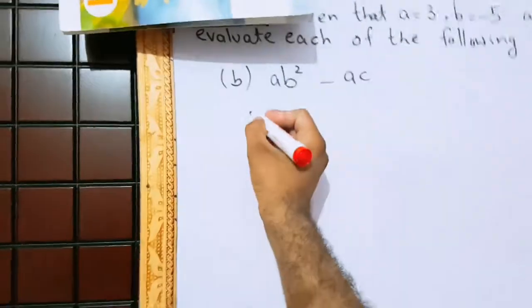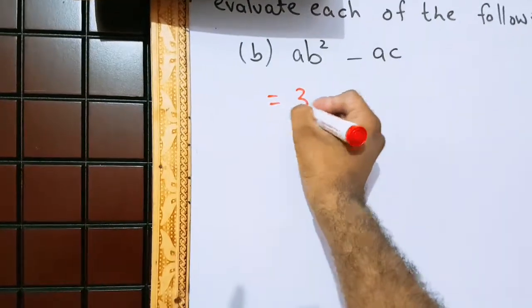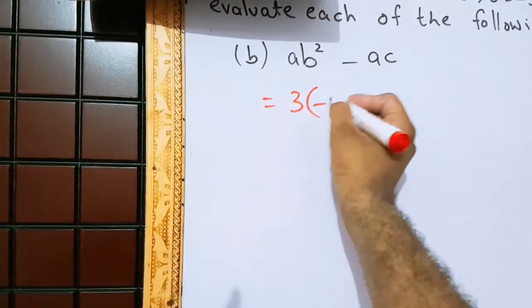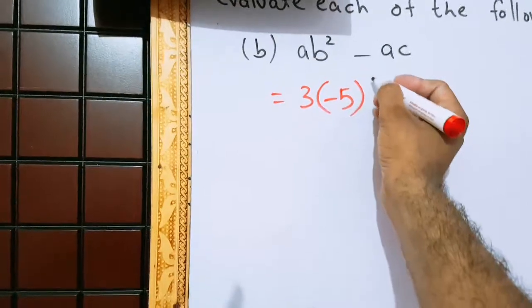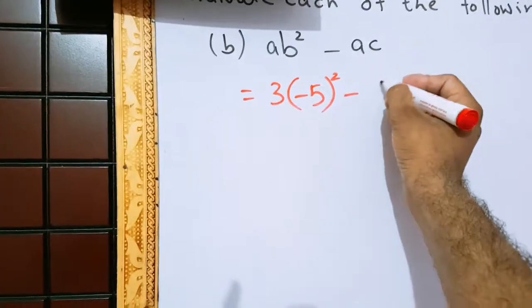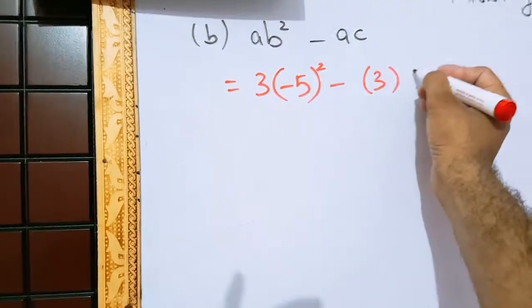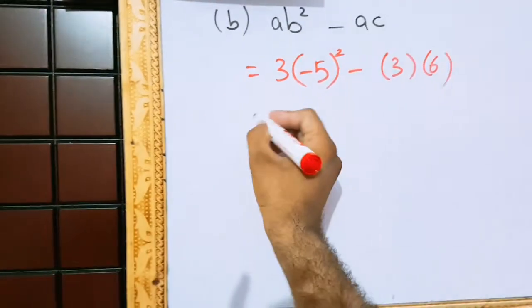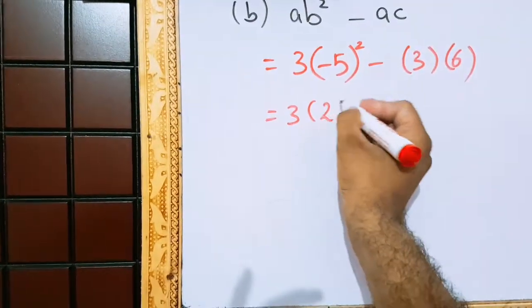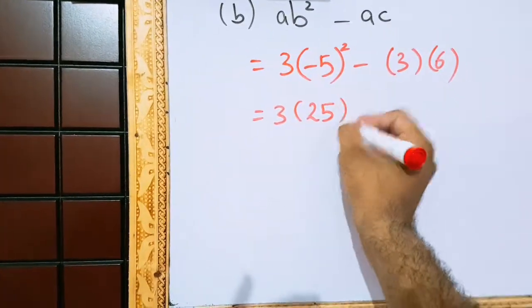Now I am going to solve part b. In place of a, I shall write 3. And in place of b, I shall write minus 5 and square. In place of a, I shall write 3. And in place of c, I shall write 6. 5 square is 25. Minus square is plus. Positive 25.